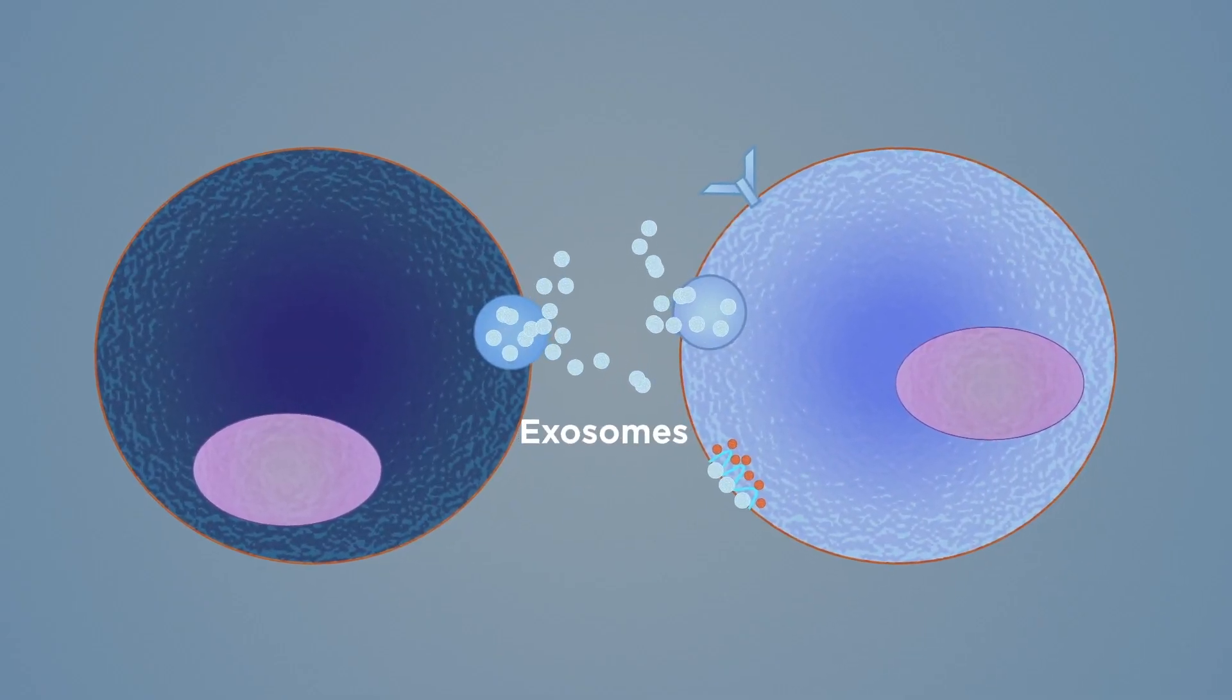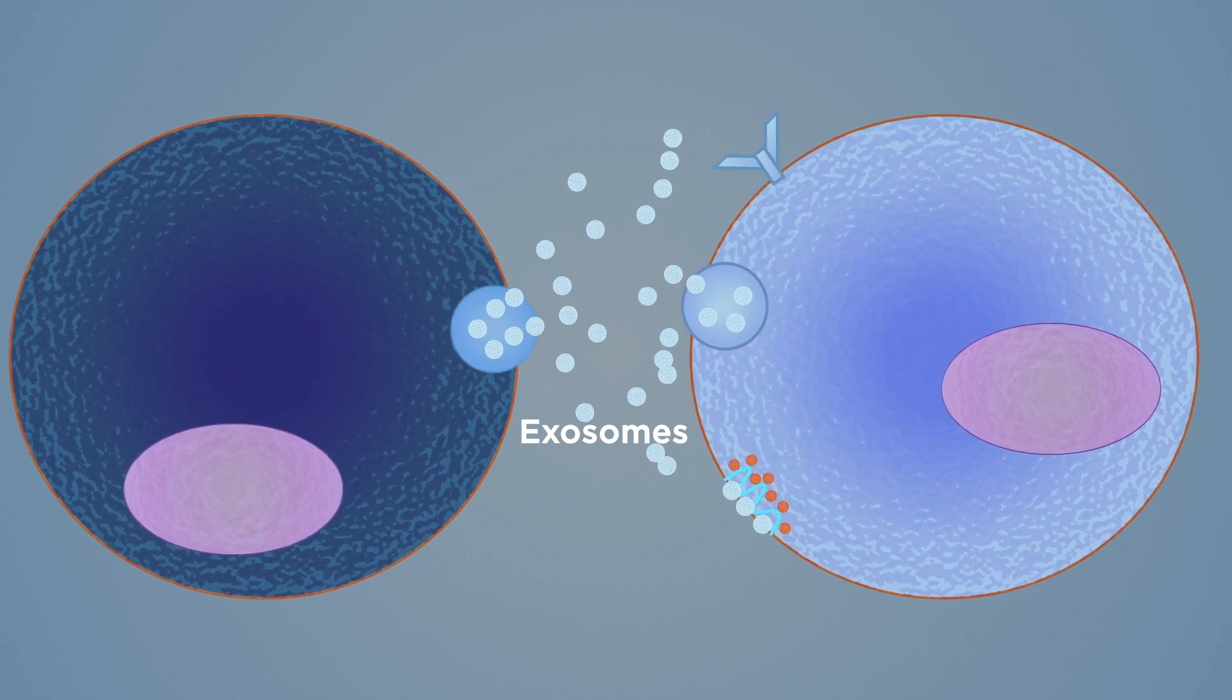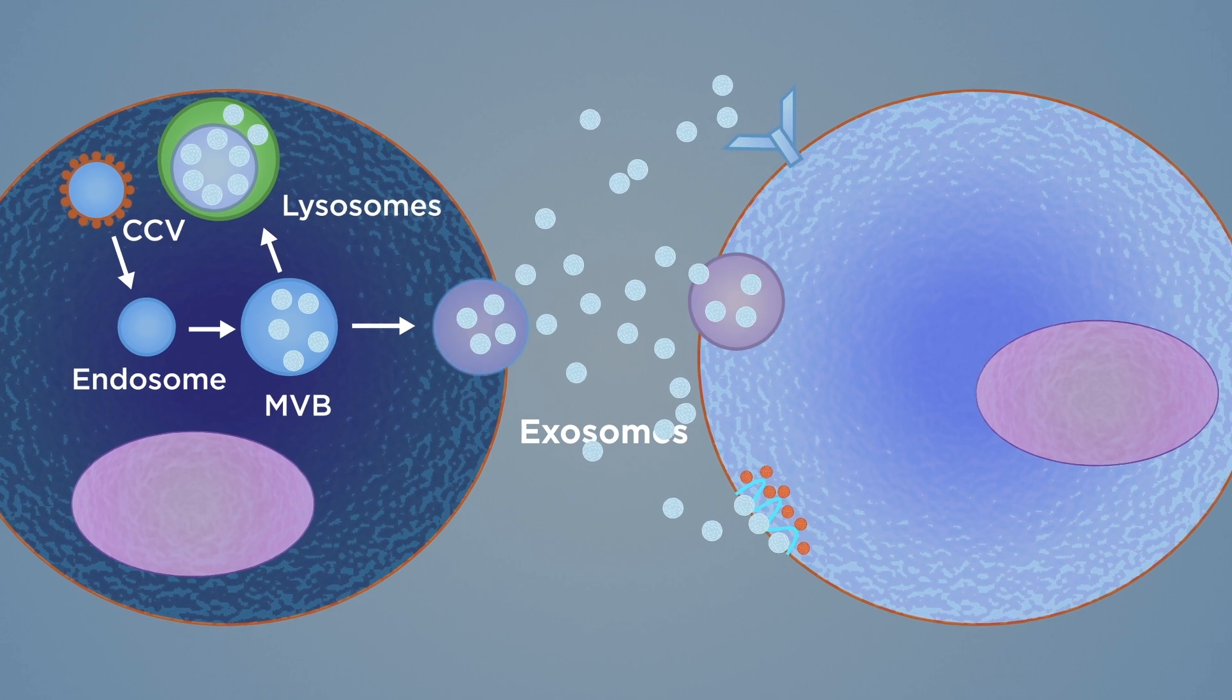Exosomes are tiny nanoparticle structures that facilitate cell-to-cell communication. Exosomes are created by inward budding of endosomes and then secreted out of the cell membrane.